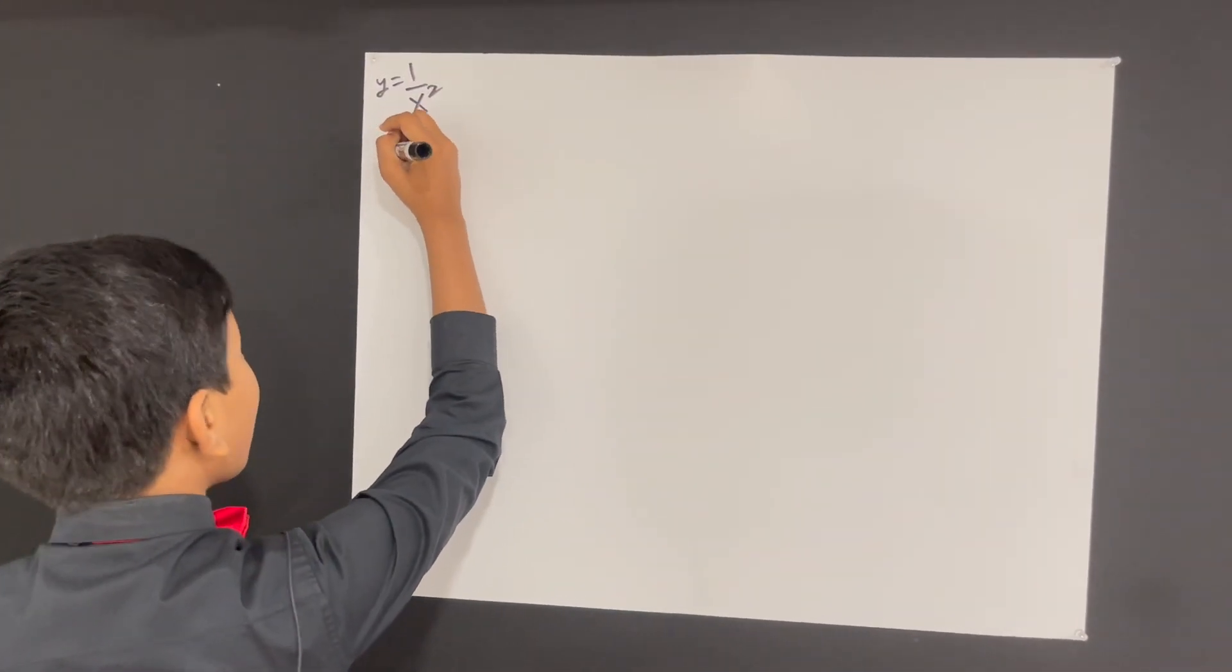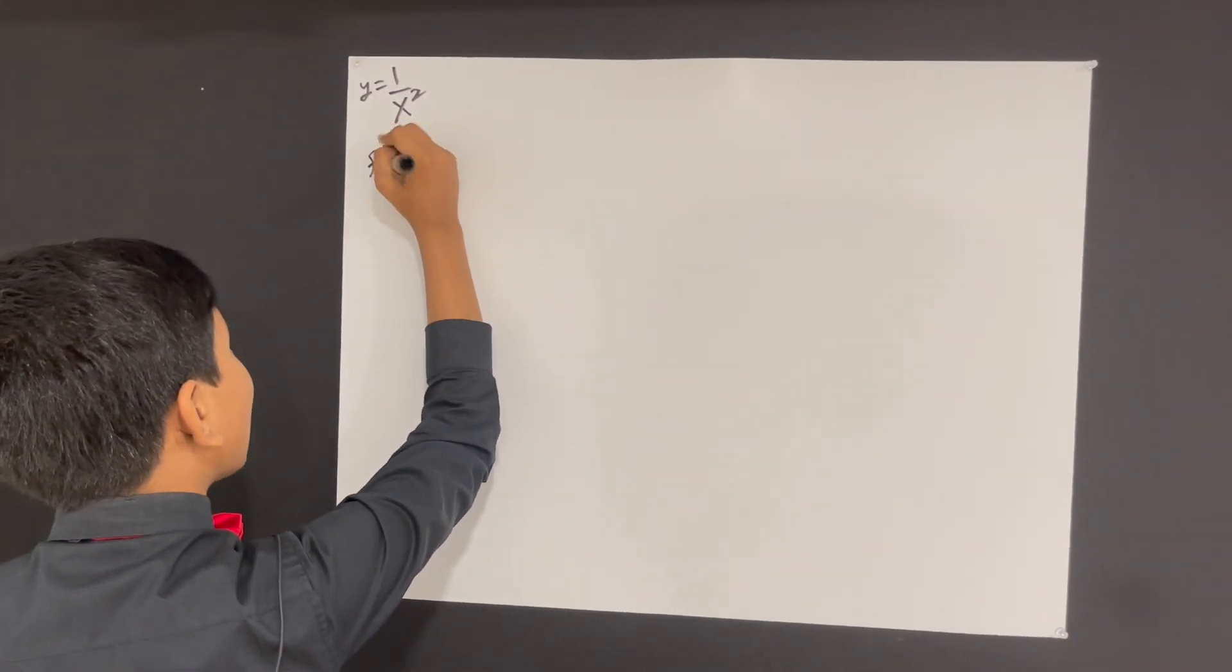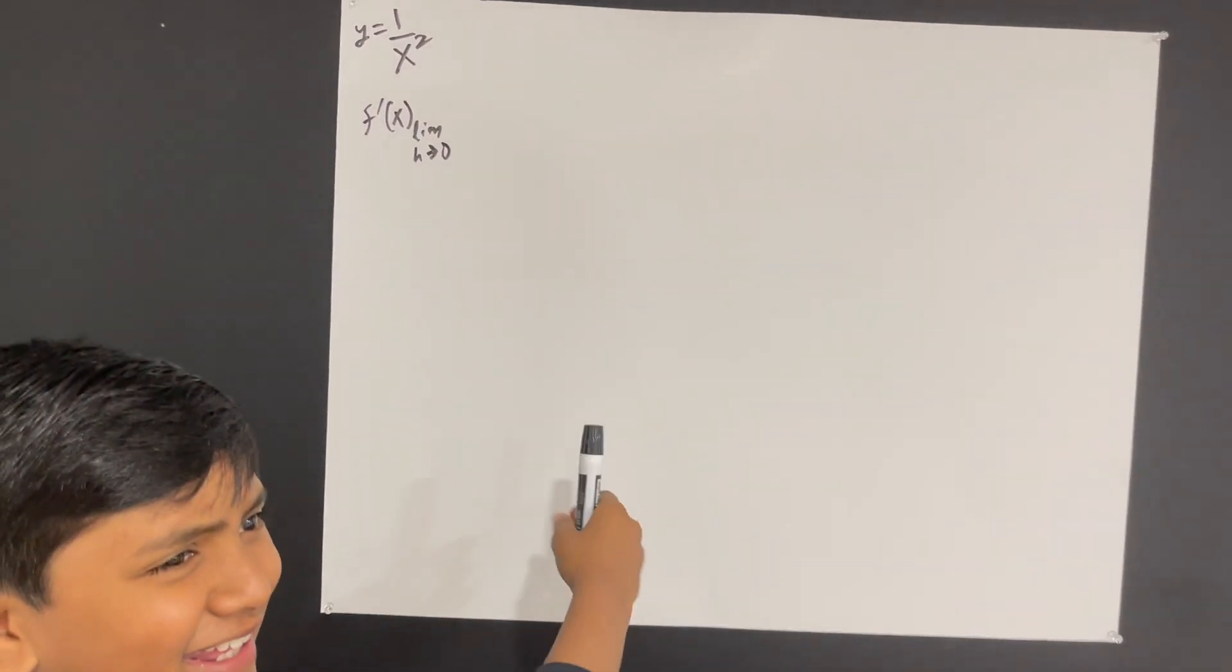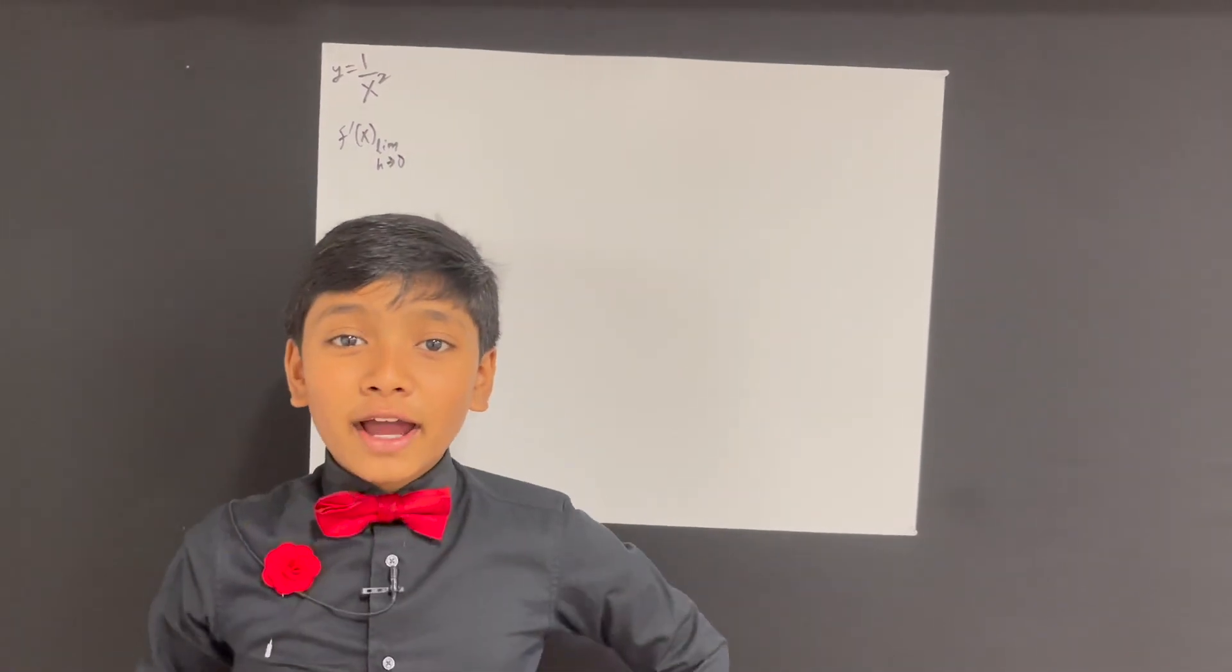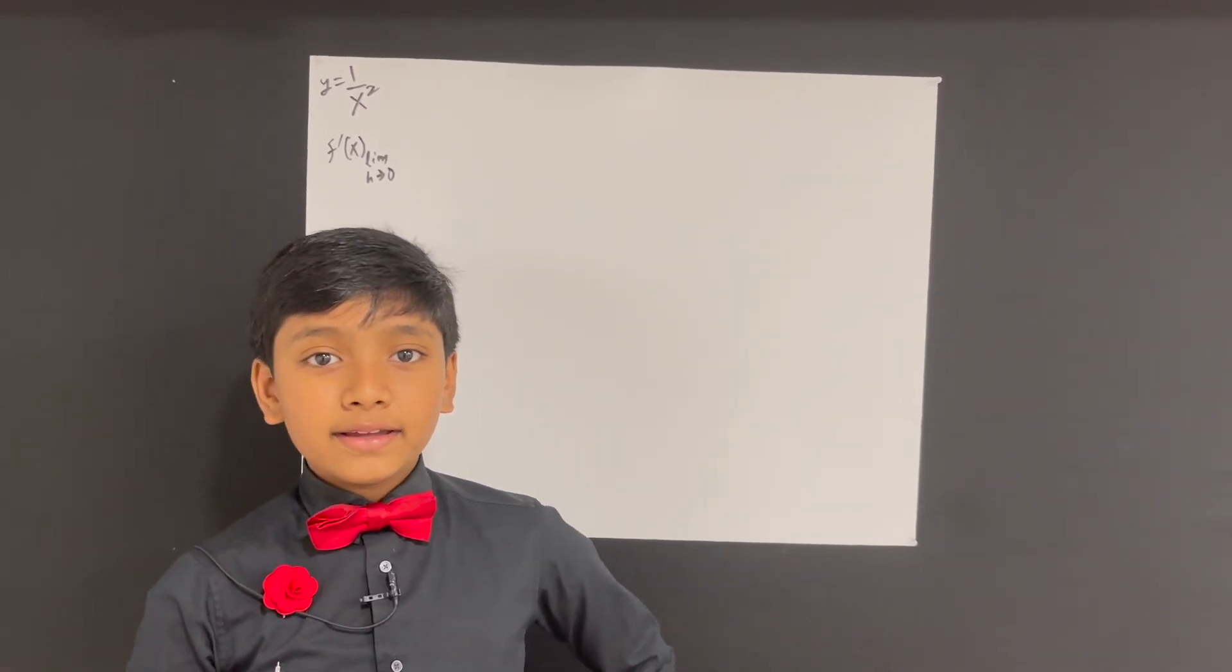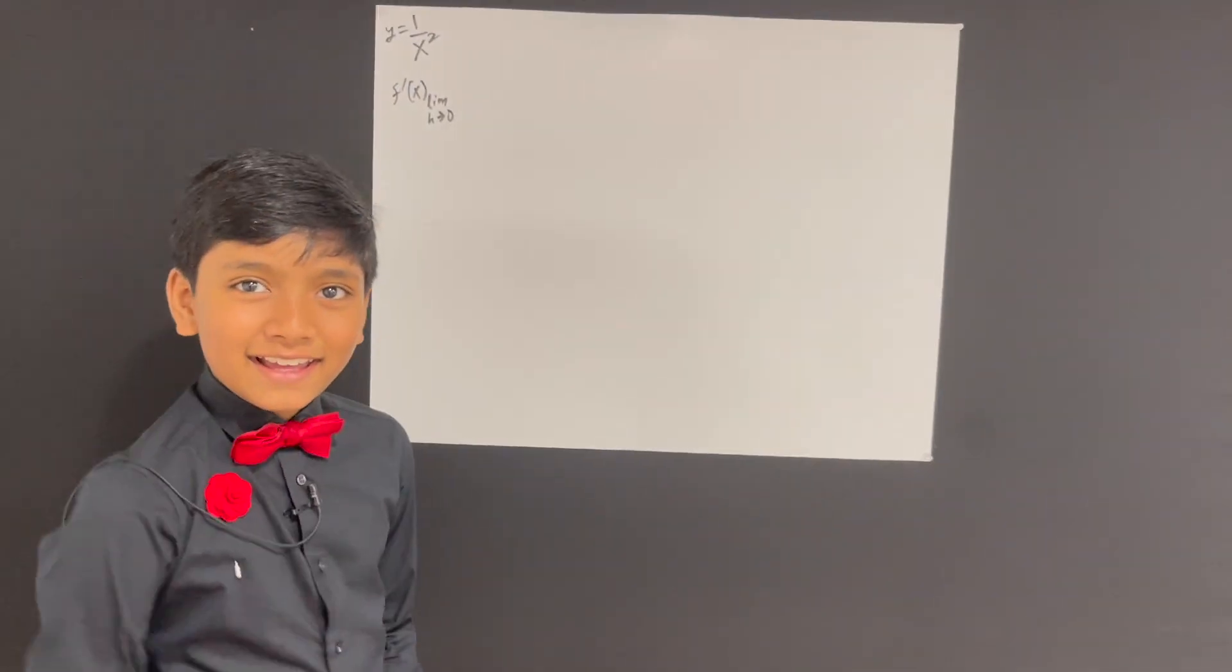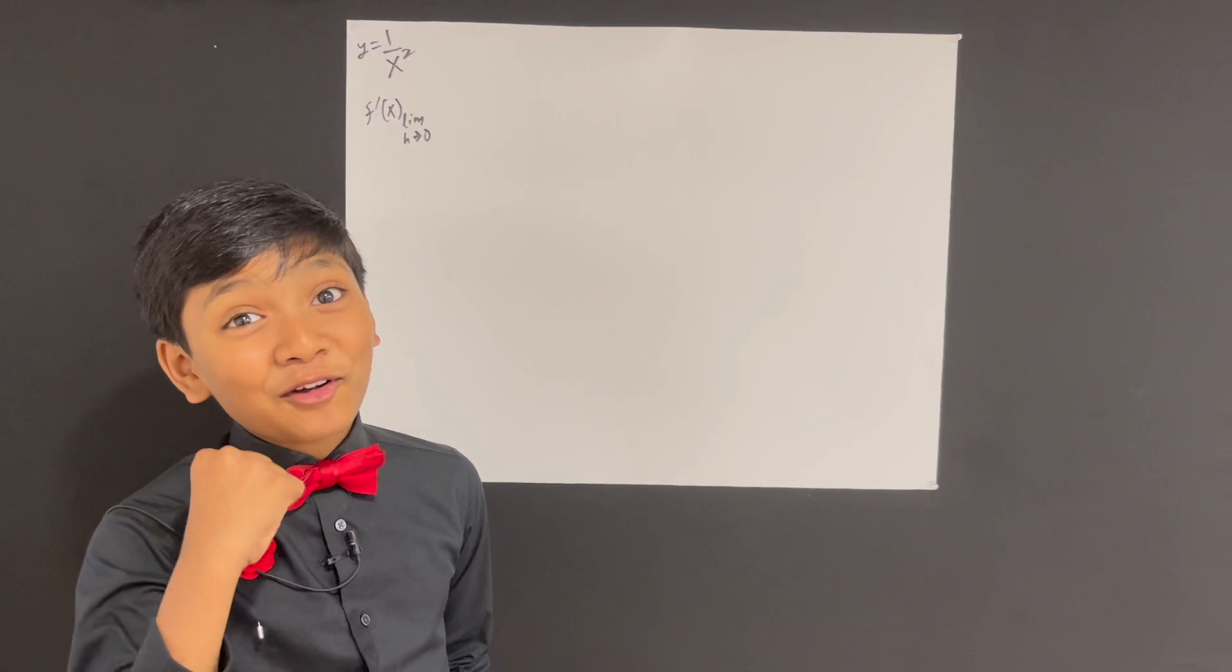So, f prime of x, of course, as you always know, is the derivative of this thing. Now, you might say, suborno, this is repetitive! Well, I'm going to teach you a way to do all of this, but quicker. It has a lot of power, you might say.